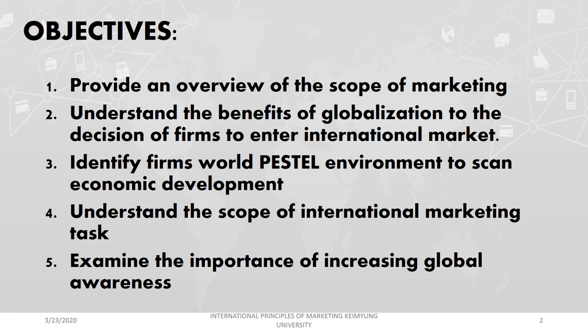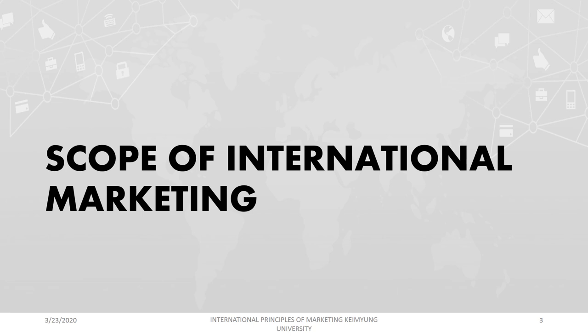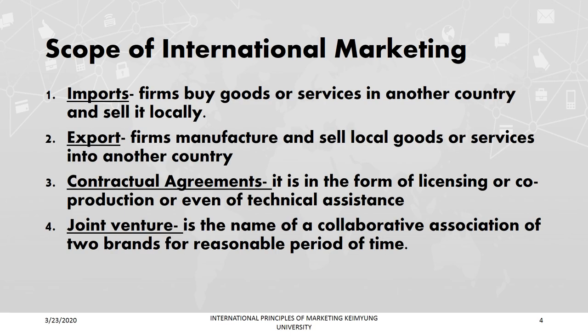Today we're going to study the overview of the scope of marketing, and also understand why firms have to go global — why they sell their products and services in other markets — and what's the effect of globalization on a firm's performance. We'll also try to identify the PESL environment: scanning, monitoring the environment so that we can forecast what we should do with the external environment. Let us also examine the importance of increasing global awareness. In general, there are eight scopes of international marketing.